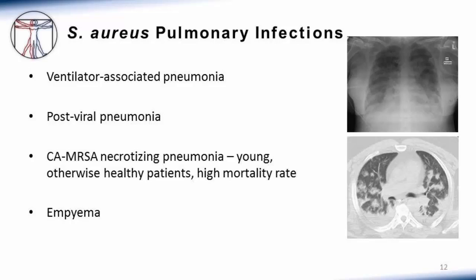Staph aureus causes a number of different pulmonary infections. For patients on the ventilator, staph aureus is present in the anterior nares and oral mucosa, and the endotracheal tube can serve as a conduit for it to reach the lungs — making it the leading pathogen in ventilator-associated pneumonias at many institutions. The original descriptions of staph aureus infections were actually in post-viral pneumonias in the early 1900s: patients may get a viral infection such as influenza causing epithelial damage, and staph can then move in. These patients start to improve and then take a sudden turn for the worse with a secondary bacterial pneumonia.